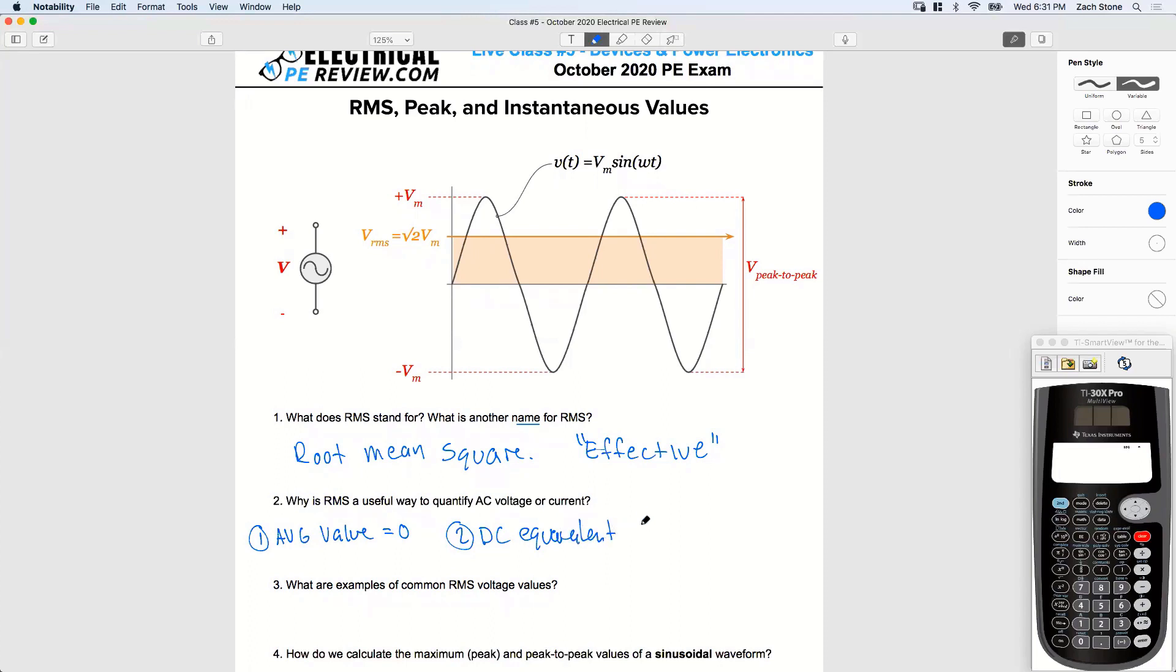How fast does our AC power supply change values from the peak value to the negative value back to the peak value? How fast is this changing? 60 Hertz. Okay. So if our frequency is 60 Hertz, how fast are we completing each cycle? How do we find period? T equals one over frequency, right? What's one over 60 Hertz?